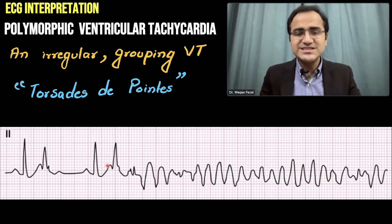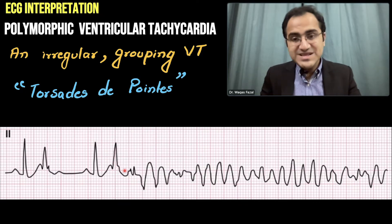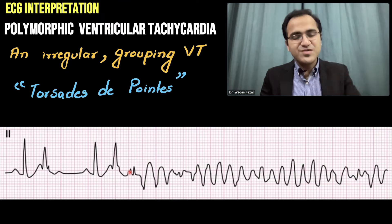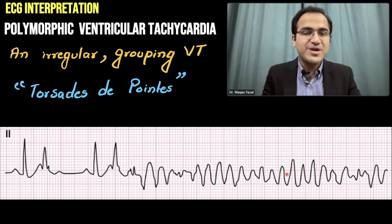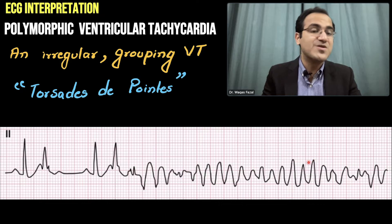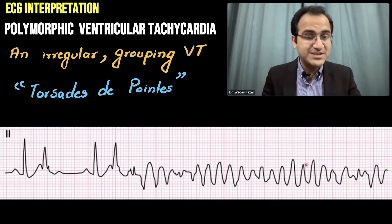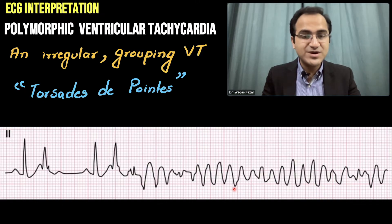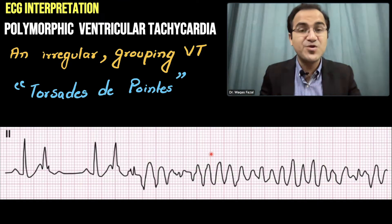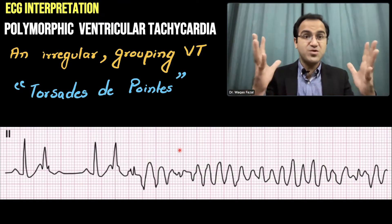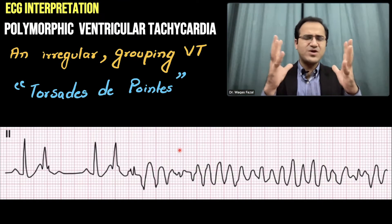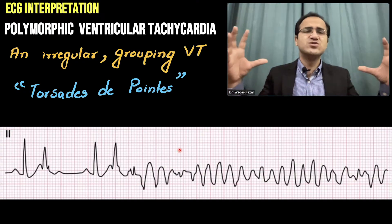Looking at this ECG, the patient was already not in a normal rhythm and then developed a polymorphic ventricular tachycardia. This is the polymorphic ventricular tachycardia — the twisting around the points. These are the pointed ends, these are the round waves, these are the points again, and these are the round parts. This is called twisting of the points — torsades de pointes — with multiple foci beating simultaneously, jumbling together to form this polymorphic ventricular tachycardia.